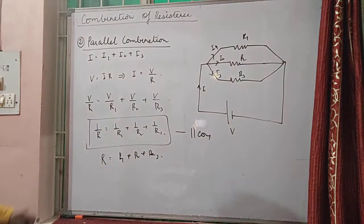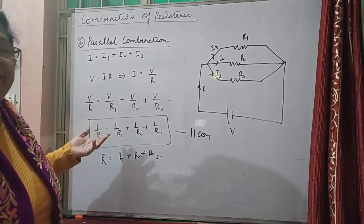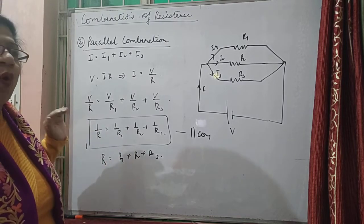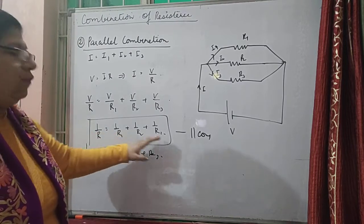If you have seen here, the equivalent resistance - when we will be doing it by numbers also - the equivalent resistance will always be smaller than any of the resistances.